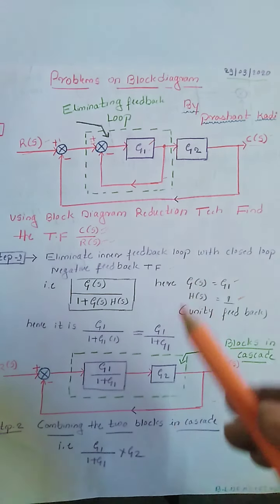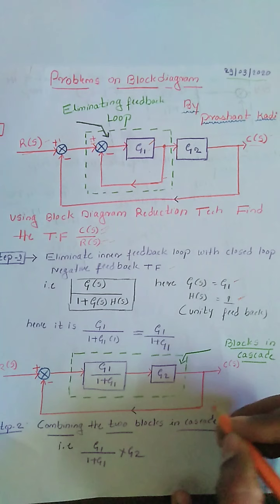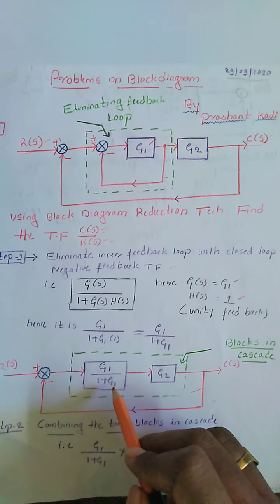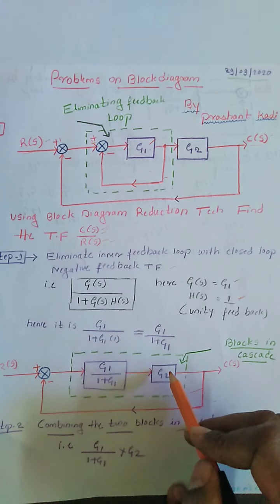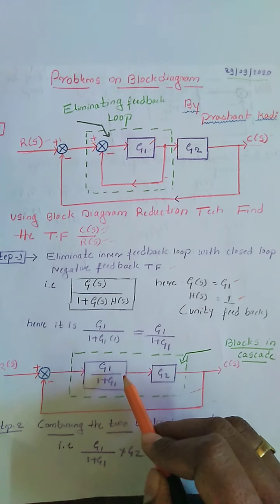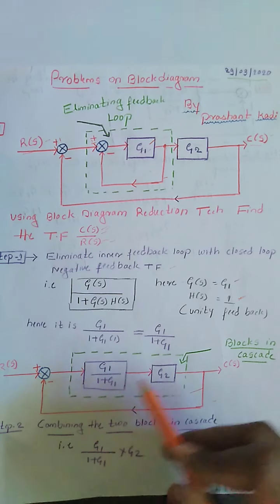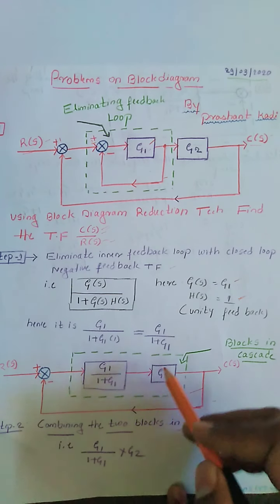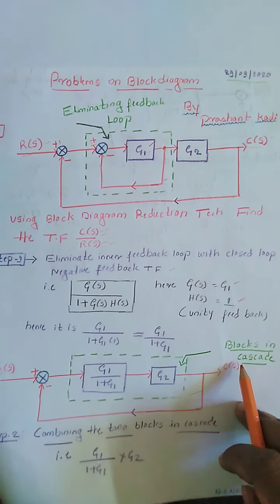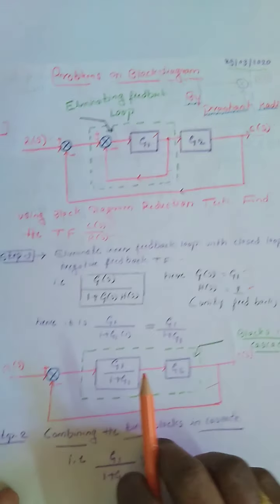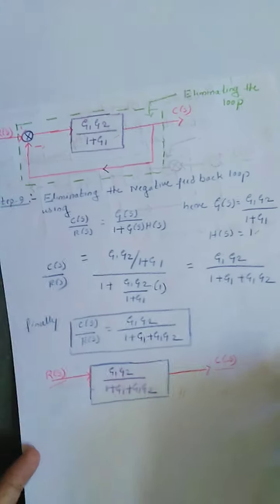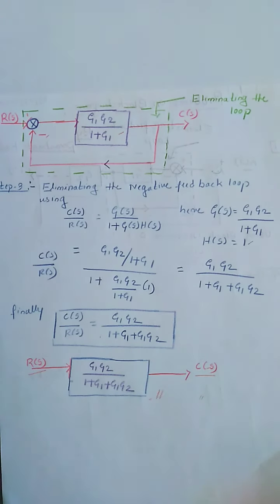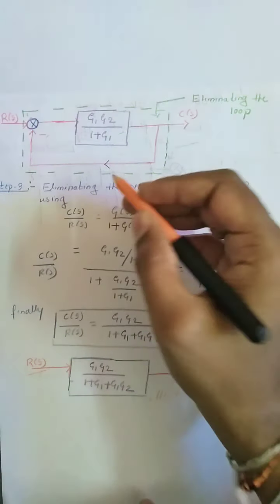After eliminating that loop, the block diagram reduces to a form where G1/(1+G1) and the block G2 are connected in cascade. By using the block diagram reduction rule, we can combine those two blocks by multiplying their individual transfer functions — that is the second step. The block diagram then reduces to this form.